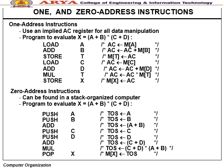One-address instruction uses an implied register (accumulator) for all data manipulation. To evaluate X = (A + B) × (C + D): LOAD, ADD, STORE, LOAD, ADD, MUL, STORE. Zero-address instruction is found in stack-organized computers: PUSH A, PUSH B, ADD, PUSH C, PUSH D, ADD, MUL, POP X.